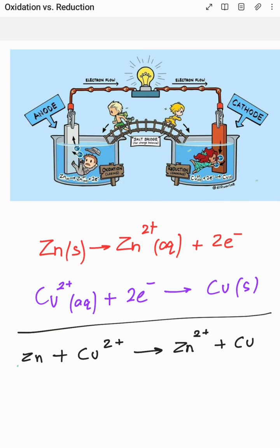Let's understand the basic difference between oxidation and reduction. People confuse a lot between these two very common terms, so we will understand the difference using this galvanic cell, or as you also call it, a Daniel cell.